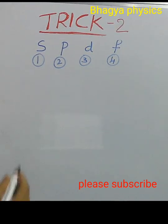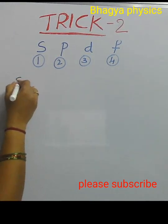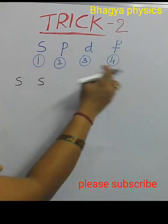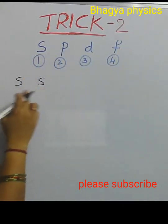Let us see how to arrange the orbitals. First of all, write S two times, take S and SPDF orbitals 1, 2, 3, 4, numbering I have given. S orbital take two times.